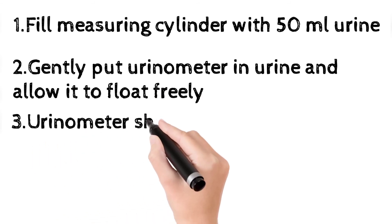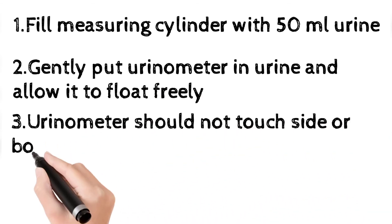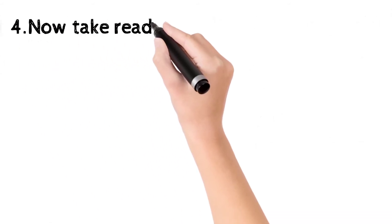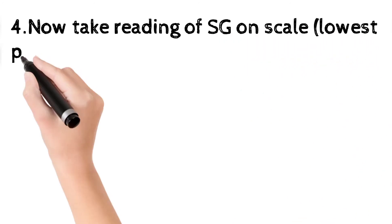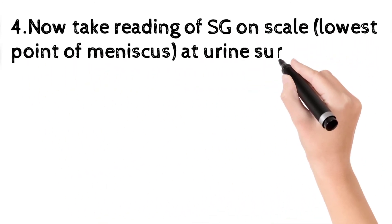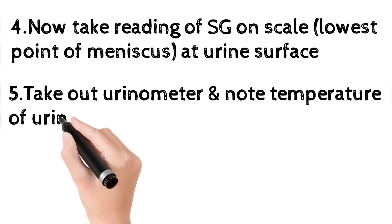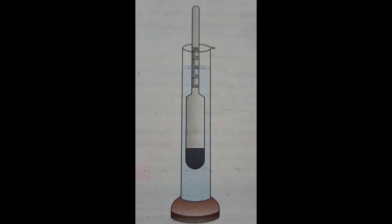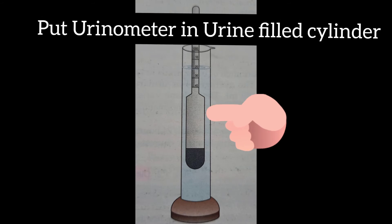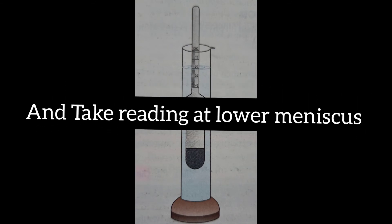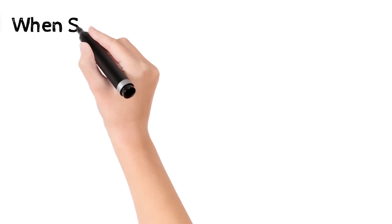Then gently put the urinometer in the urine and allow it to float freely. Take care that the urinometer should not touch the side or bottom of the cylinder. Take the reading of specific gravity on the scale at the lowest point of the meniscus at the urine surface. Then take out the urinometer and immediately note the temperature of the urine with a thermometer. You can see the cylinder filled with at least 30 to 50 ml of urine with the urinometer floating freely.